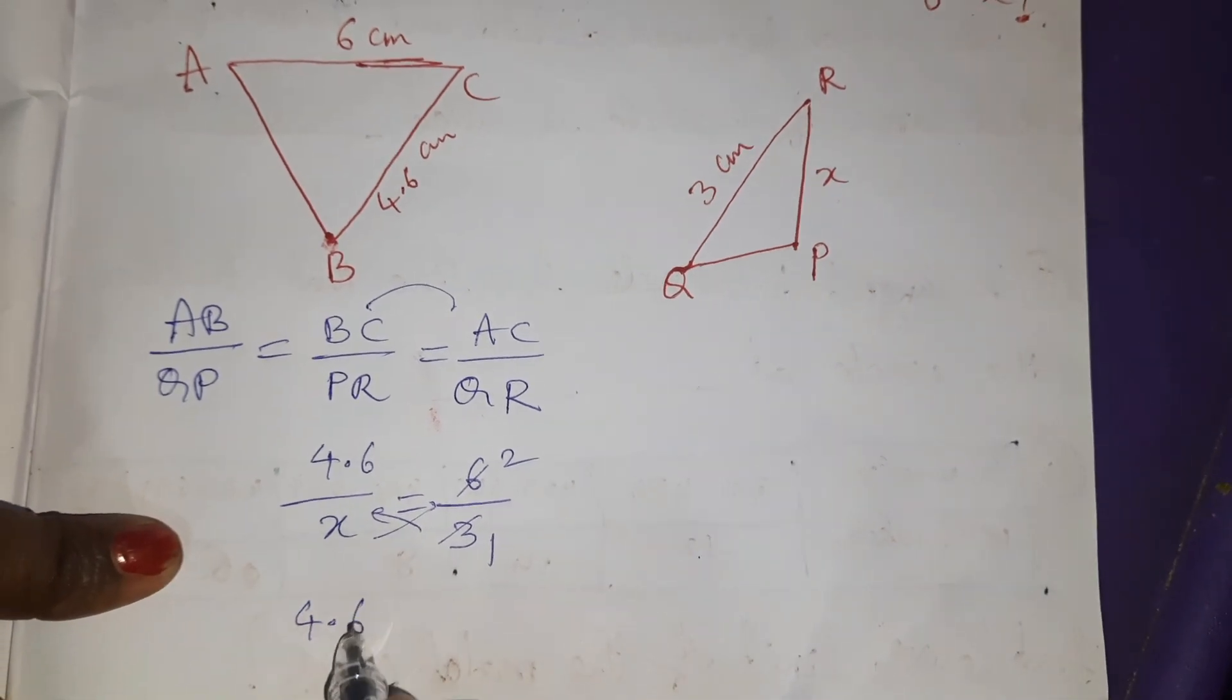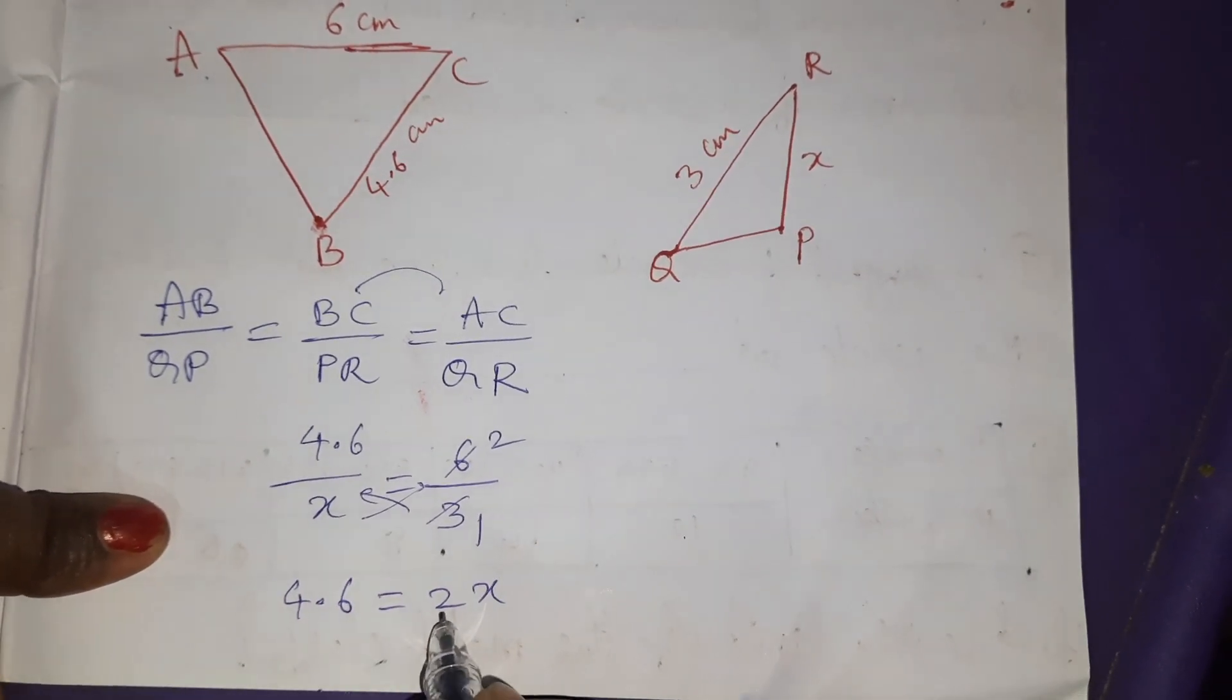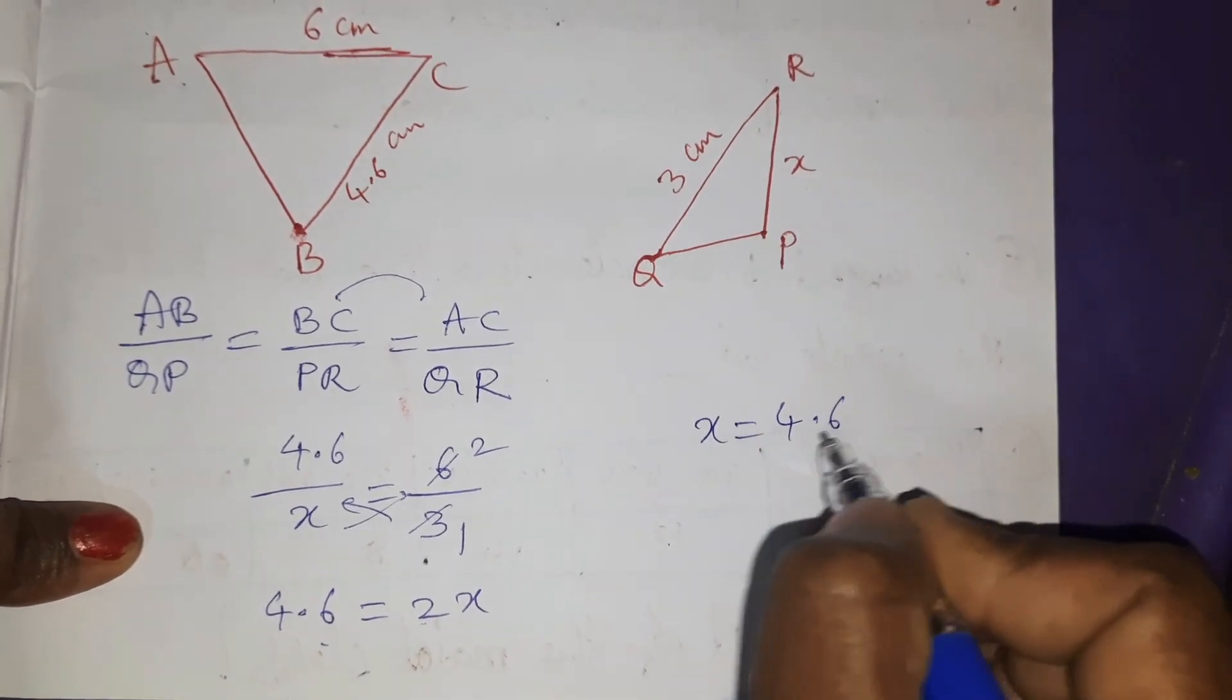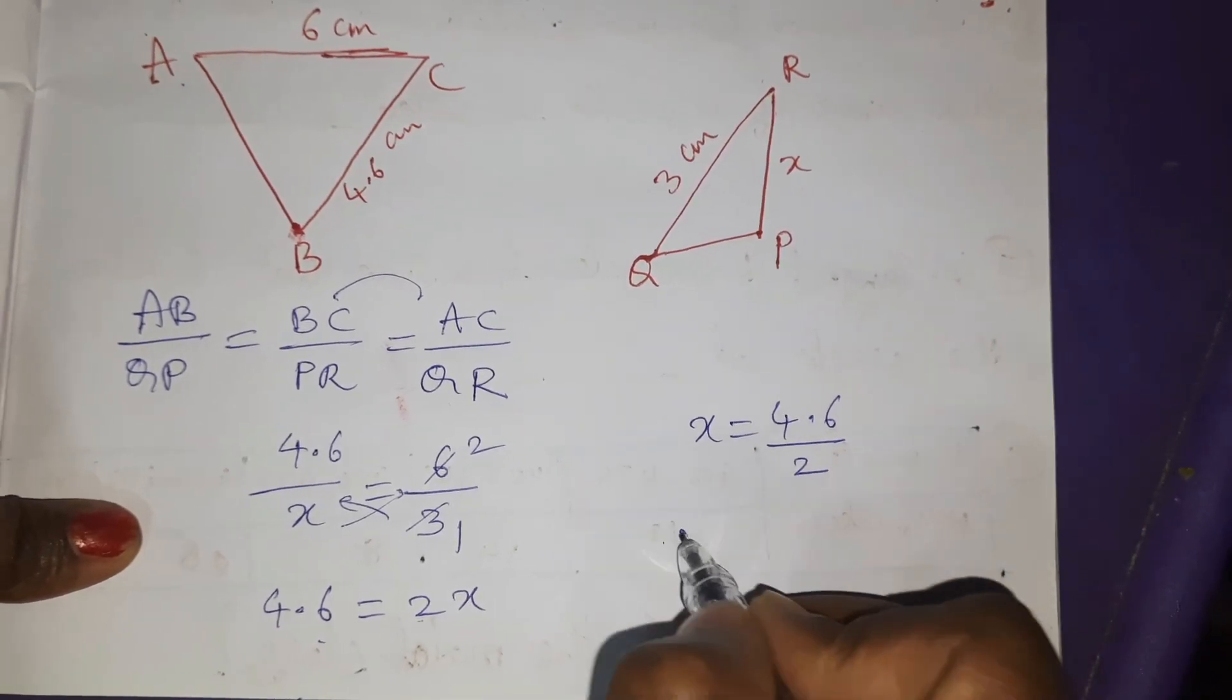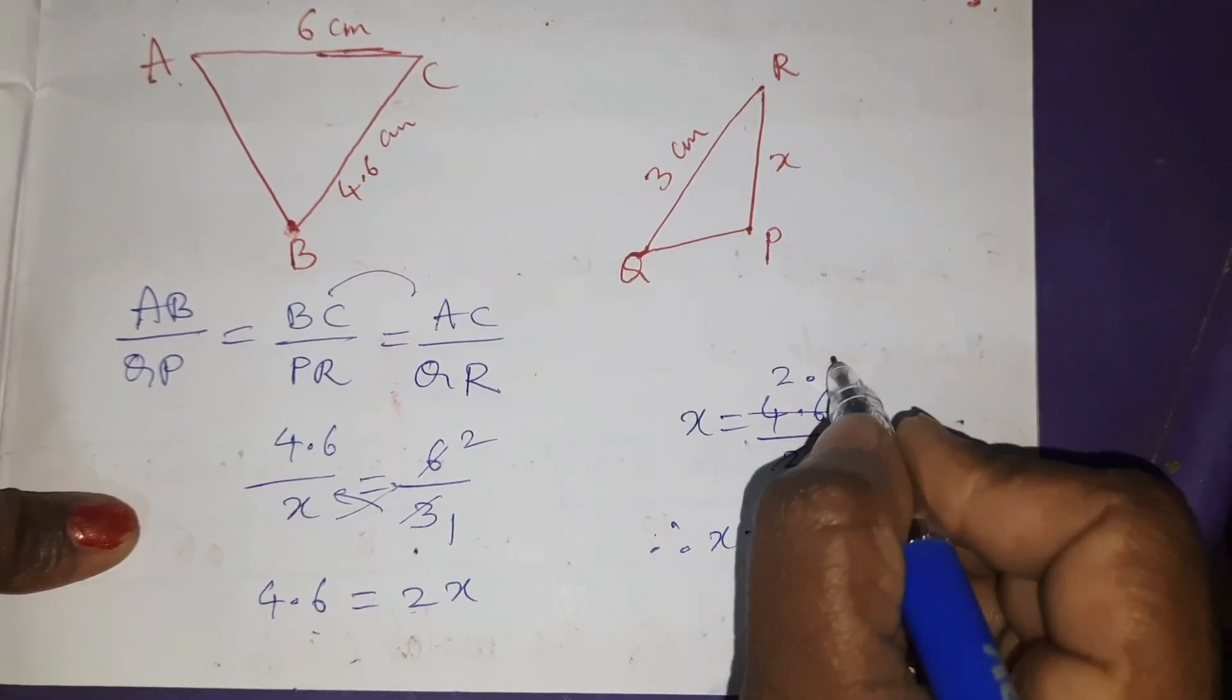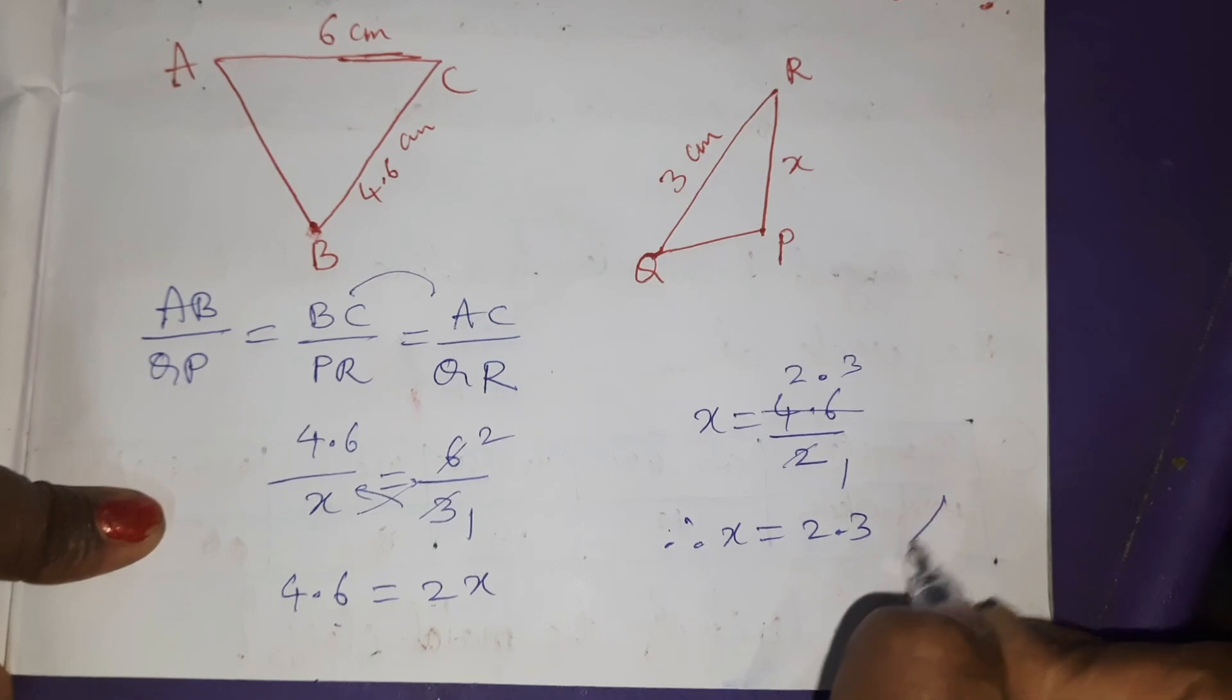4.6 = 2x. I need x. Sending 2 to left side, x = 4.6/2. Therefore, x = 2.3, answer.